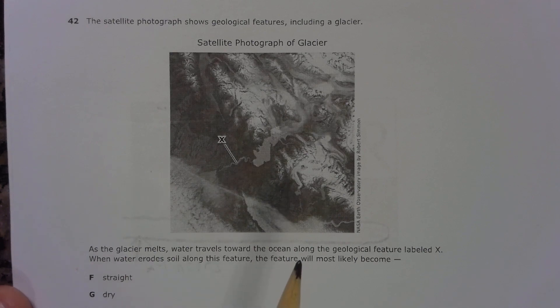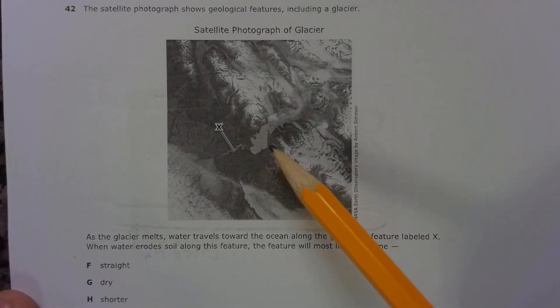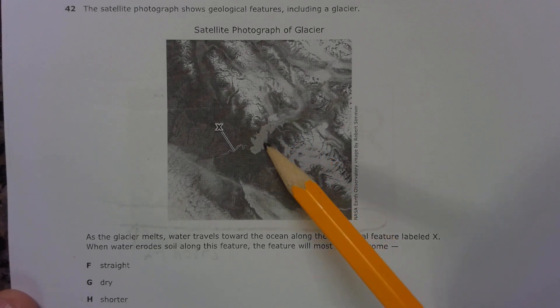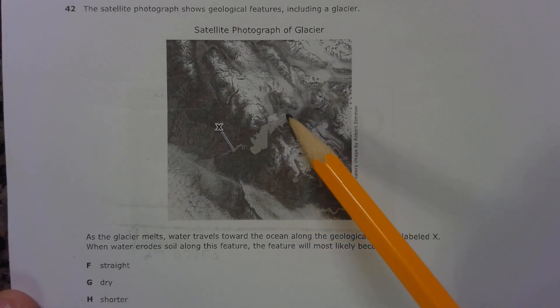Alright, last one, number 42. So the satellite photograph shows geologic features, including a glacier. So if we're looking, this is like we're looking down from space. This large, shiny-looking material here is a glacier.